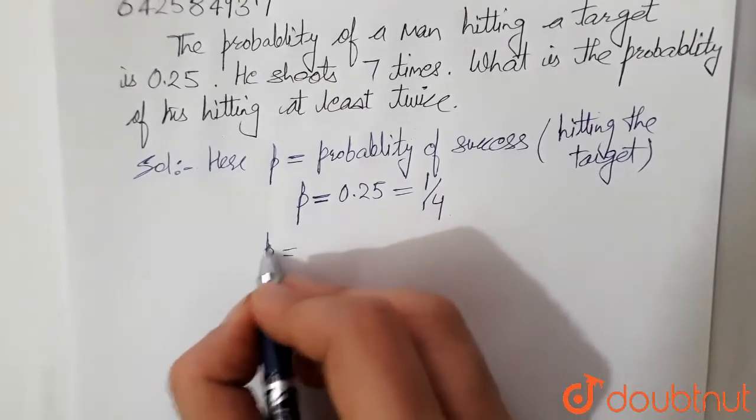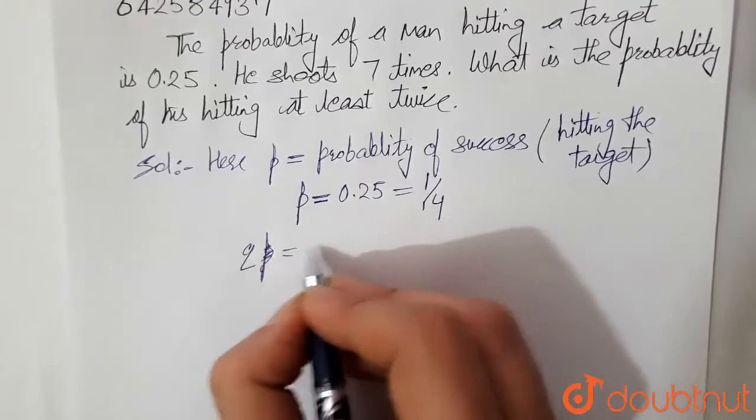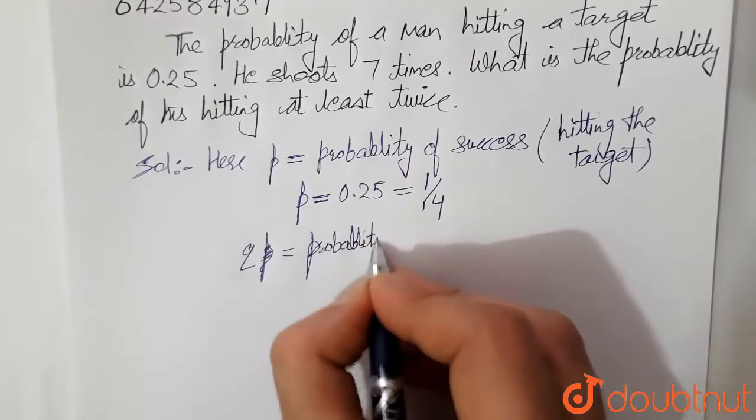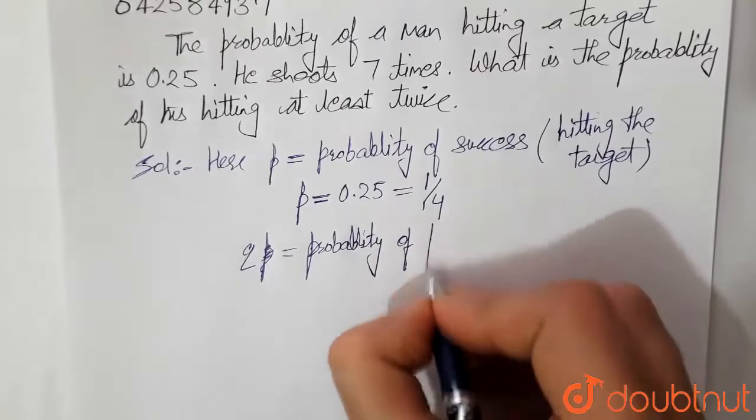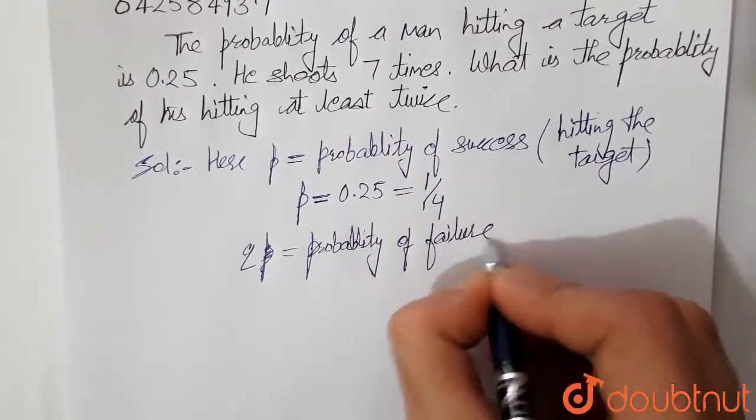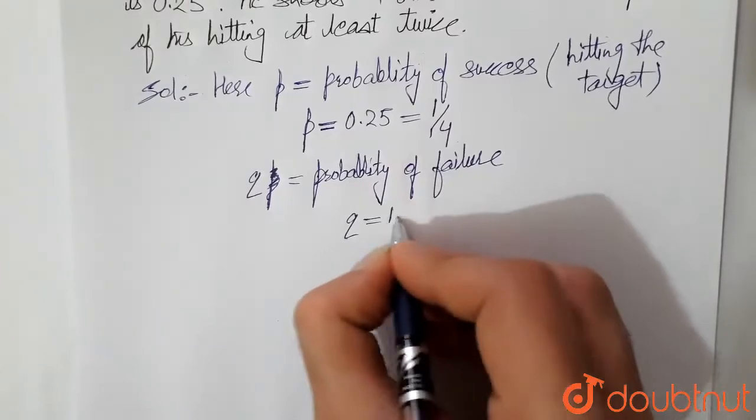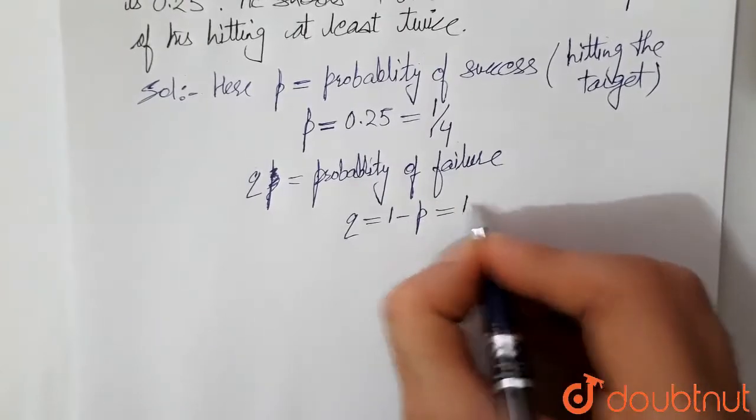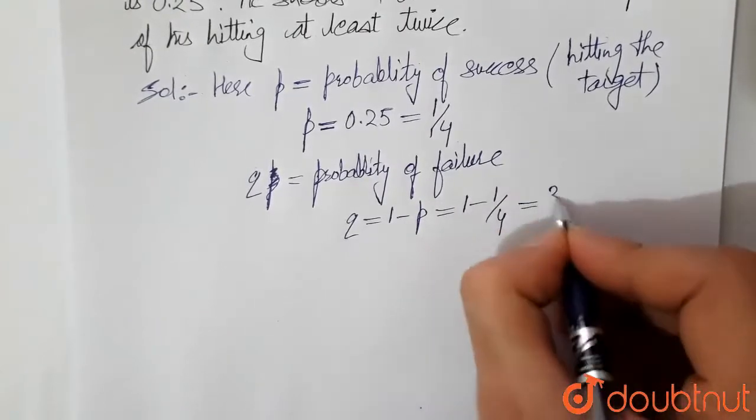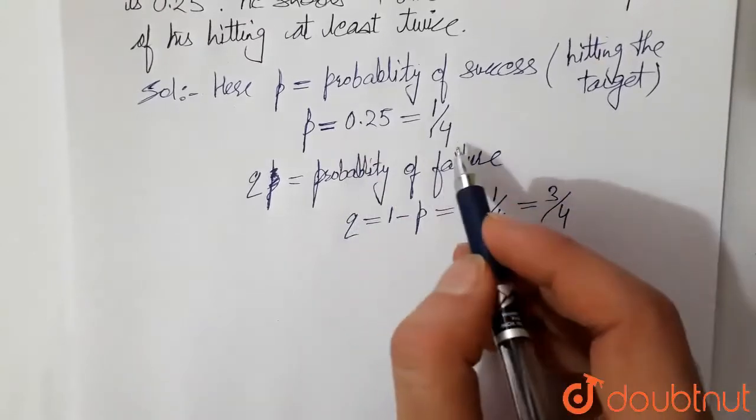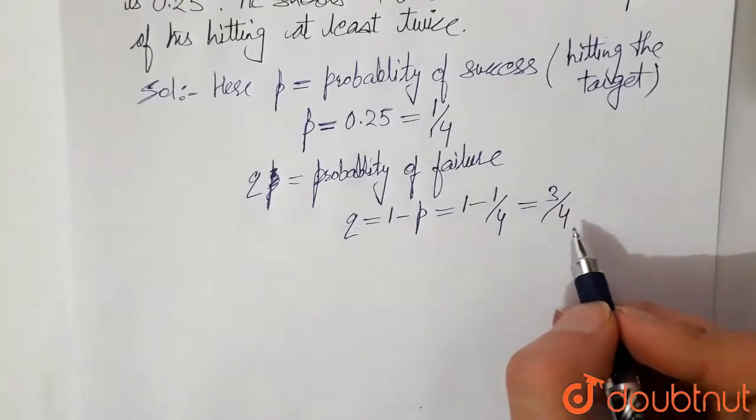Then if q is probability of failure, then q becomes 1 minus p. That is 1 minus 1 by 4. This becomes 3 by 4. So probability of success is 1 by 4 and probability of failure q is 3 by 4.